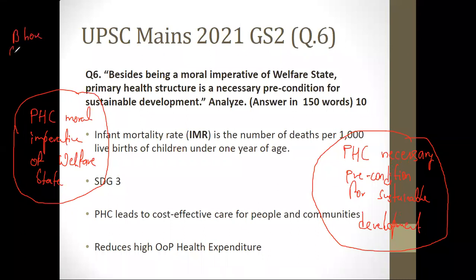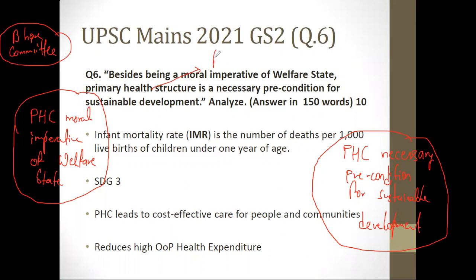According to the Bhore Committee, primary health structure is the first point of contact. If you fall ill, the first place you go — the first point of hospitalization — is your PHC. The second point of contact is secondary health care, and the third is tertiary care. Primary health structure is the first point of contact for healthcare seekers and includes preventive, promotive, and curative healthcare.